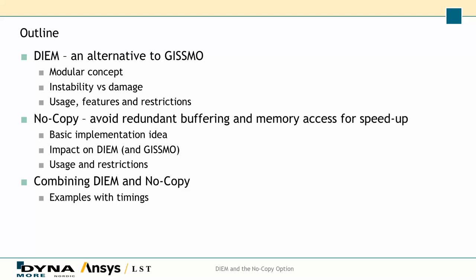DM is an alternative gizmo which is based on the modular concept. I will talk about instability and damage, which are two broad characteristics of failure modeling in numerical simulations. I will touch upon how to use DM broadly, its features and some of its restrictions. The no-copy option is the way to avoid redundant buffering and memory access to speed up explicit calculation, and I will touch upon the basic implementation idea and the impact it has on DM and gizmo, how to use it and its restrictions. I will end with showing an example where DM is combined with the no-copy option to see the net effect.